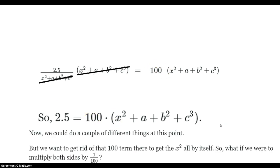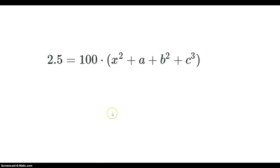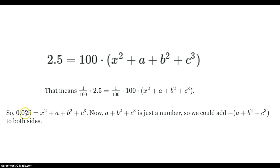Now we could do a couple of things, but I'm going to divide both sides by 100 — in other words, multiply both sides by 1 over 100 — so the 100 goes away and we get x-squared by itself. Multiplying both sides by 1 over 100, the left-hand side becomes that, and the right-hand side becomes this.